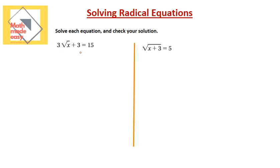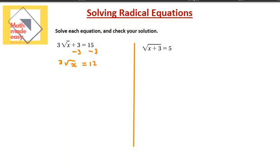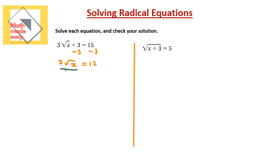We have 3 radical x plus 3. To isolate the radical, the first thing you're going to do is subtract that 3 — do the inverse operation to get rid of it. You'll have 3 radical x equals 12. Your next step is dividing both sides by 3, and then you get that radical x is equal to 4. After isolating the radical, we get rid of the square root by squaring it, which is the inverse of square rooting.